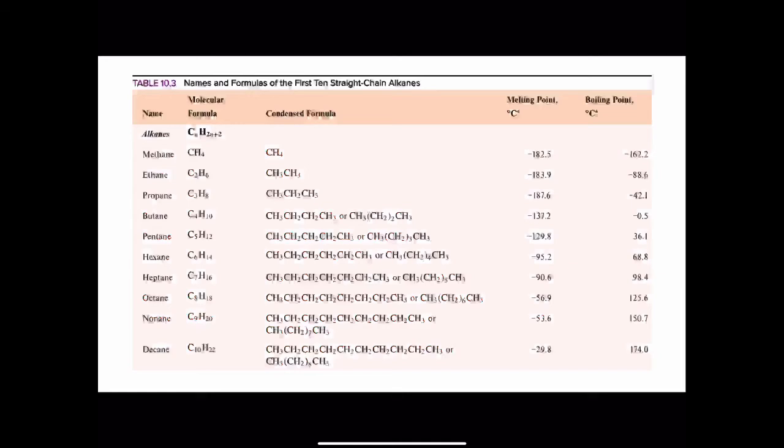Learning organic chemistry is a lot like learning a language. When you start out learning any language, you have to learn a lot of rules. One of the first things you're going to have to memorize are the first ten straight-chain alkanes found in Table 10.3. You will be responsible for memorizing the names of methane, ethane, propane, butane, pentane, hexane, heptane, octane, nonane, and decane.